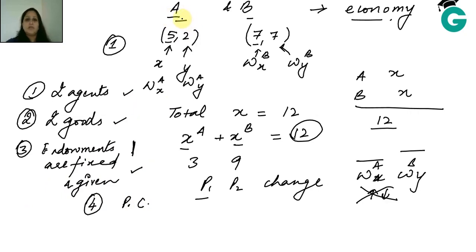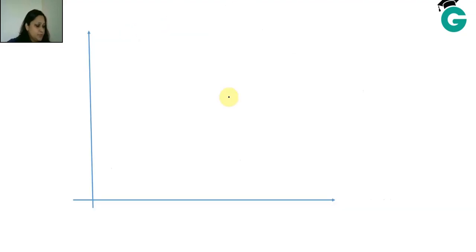The last one is that we have perfect competition. A doesn't say that I should tell the price, B doesn't say that I should tell the price. So we have these four assumptions for the Edgeworth box. When we first made a curve, we used to take X here, Y here, we used to have a budget line.